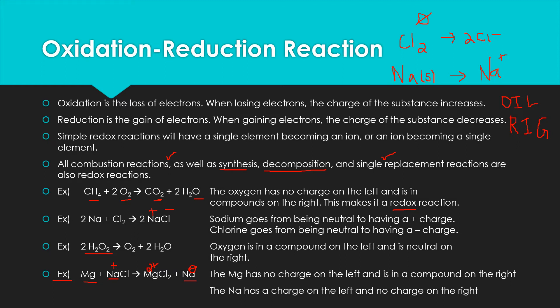In our last section, we're going to be able to assign a charge to everything — even covalent compounds — called an apparent or assigned charge. This helps us track the electrons a bit more precisely. For now, looking for individual elements by themselves and then those elements in a compound, and noting that change in charge, is how we can recognize something as a redox reaction.